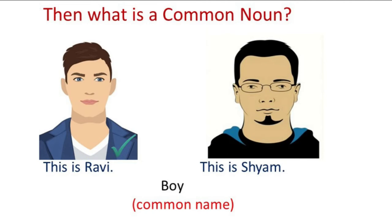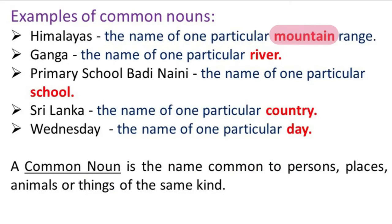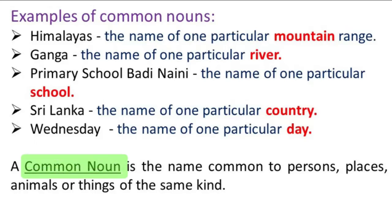Similarly, the words mountain, river, school, country and day are names that are common to people, places, animals or things of the same kind. Hence, these words are common nouns.